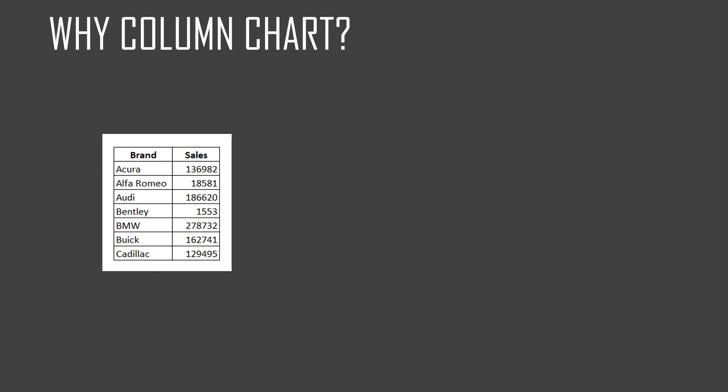Let's take a look at a simple data set. It shows the number of cars sold by each of seven brands in the United States in the year 2020. If we are asked to make sense of this data quickly — to find out which brand is number one in sales, which brand is the worst, and what is the rank of each brand — it will take some time to figure out manually, looking through for the largest number.